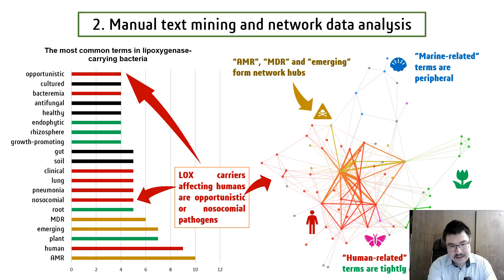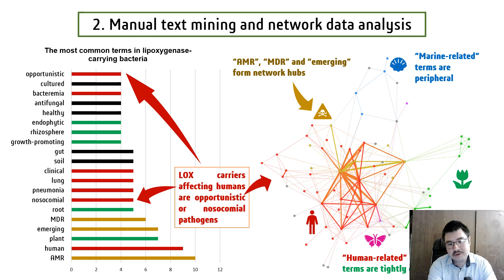The same picture is seen in the backbone of this network on this slide. Moreover, the network-building hubs are formed by one more group of terms — a public health threat group. This group includes terms like emerging antimicrobial resistance and multidrug resistance. This network reflects multiple cross-kingdom host jumps of lipoxygenase-carrying pathogens and symbionts, and a broad host range specific to lipoxygenase-carrying pathogens.